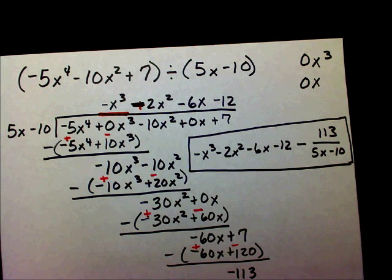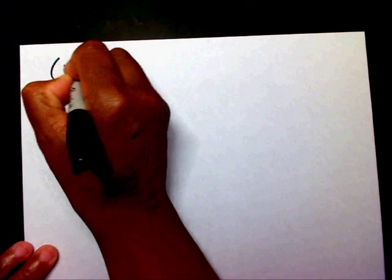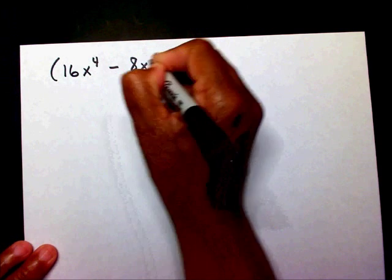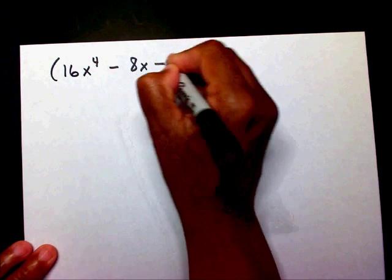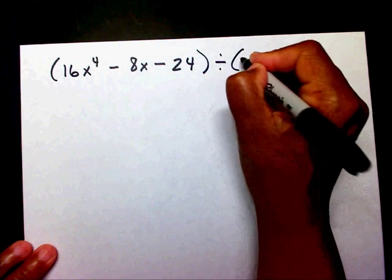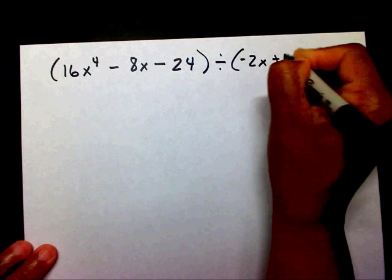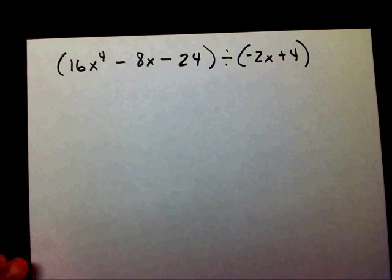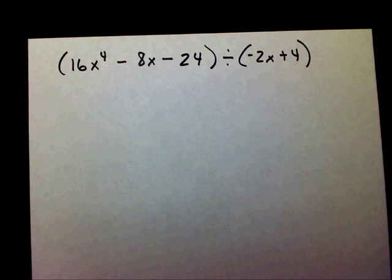Let me give you one to try. We have 16x to the fourth minus 8x minus 24 divided by negative 2x plus 4. Please divide these two polynomials and pause the video.